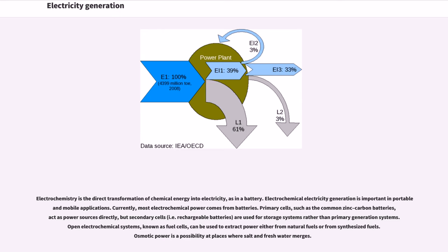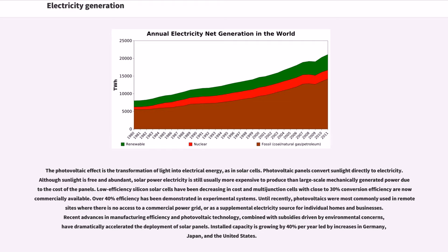The photovoltaic effect is the transformation of light into electrical energy, as in solar cells. Photovoltaic panels convert sunlight directly to electricity. Although sunlight is free and abundant, solar power electricity is still usually more expensive to produce than large-scale mechanically generated power due to the cost of the panels. Low-efficiency silicon solar cells have been decreasing in cost and multi-junction cells with close to 30% conversion efficiency are now commercially available. Over 40% efficiency has been demonstrated in experimental systems. Until recently, photovoltaics were most commonly used in remote sites where there is no access to a commercial power grid, or as a supplemental electricity source for individual homes and businesses. Recent advances in manufacturing efficiency and photovoltaic technology, combined with subsidies driven by environmental concerns, have dramatically accelerated the deployment of solar panels. Installed capacity is growing by 40% per year led by increases in Germany, Japan, and the United States.